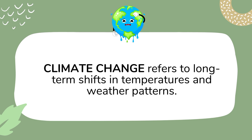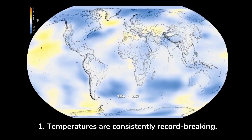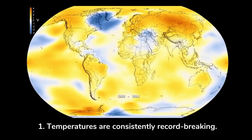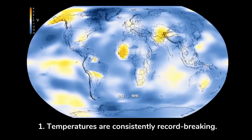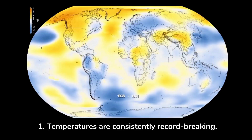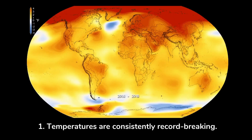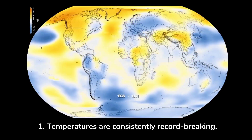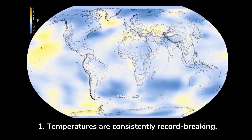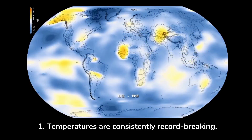Climate change refers to long-term shifts in temperatures and weather patterns. Global climate change has already had observable effects on the environment. Temperatures are consistently record-breaking: Earth's temperature has risen by 0.08 degrees Celsius per decade since 1880, and the rate of warming over the past 40 years is more than twice that — 0.18 degrees Celsius per decade since 1981. 2020 was the second warmest year on record based on NOAA's temperature data, and land areas were record warm.